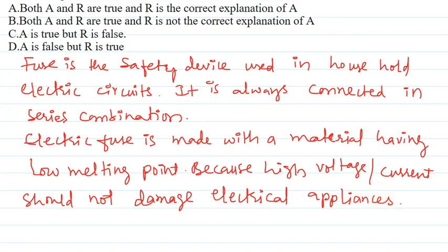Therefore, assertion is correct. Therefore, option C is correct because electrical fuse safety appliances are always prepared with low melting point material and it is always connected in series combination.